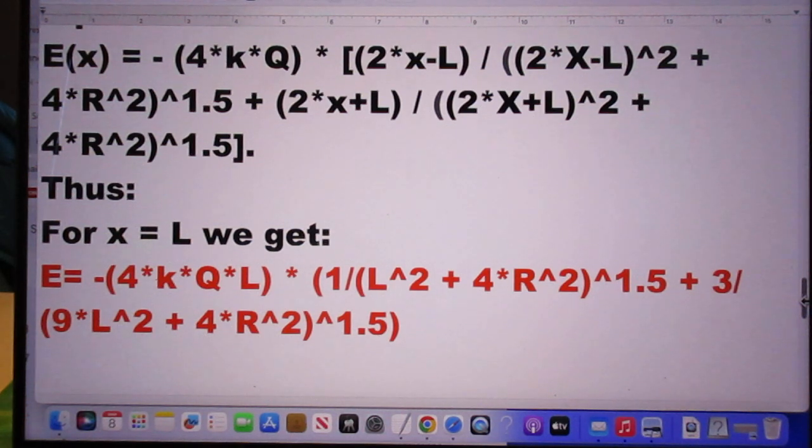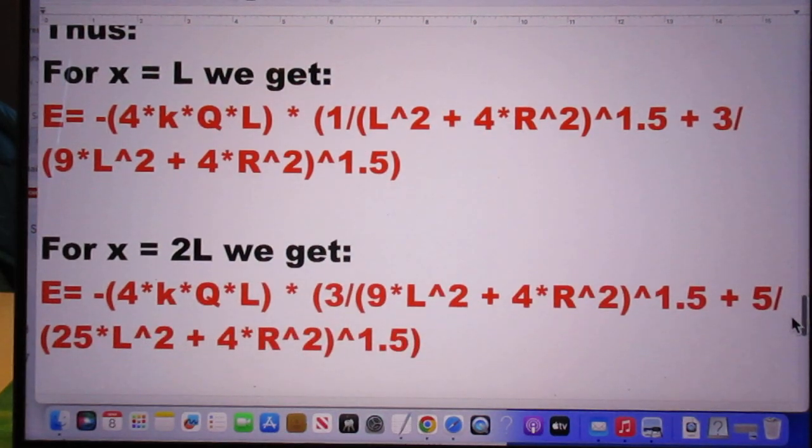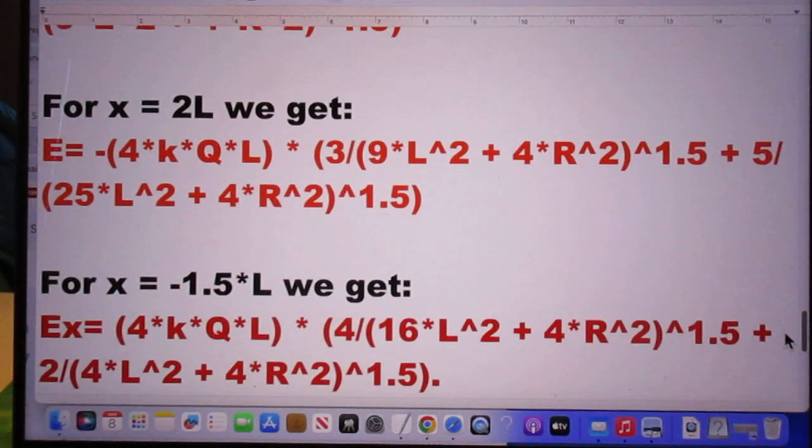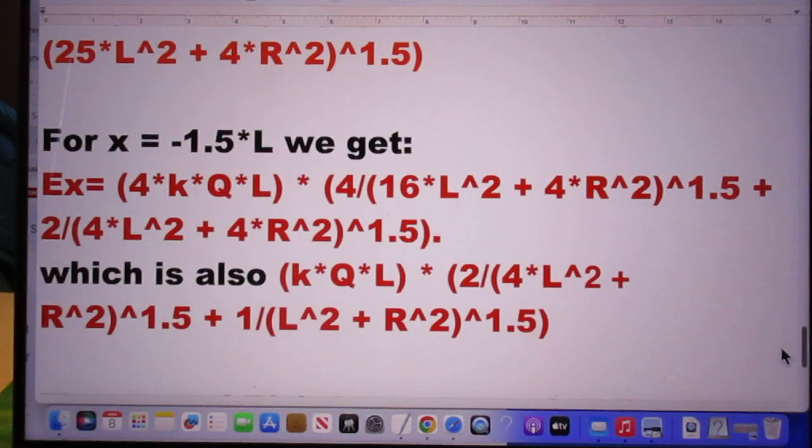And now he's done. This now is the final equation and all you have to do is now substitute in that equation first answer x equals L, second answer x equals 2L, and the third answer x equals minus 1.5L.